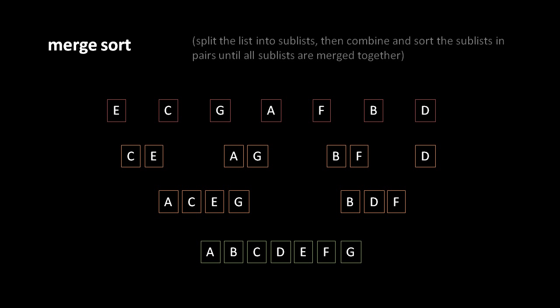The gist of merge sort is a divide and conquer strategy. We first consider each element as if it's its own sublist, and then we take pairs of those sublists and merge them together. It's in the merger process that we sort the items, so the result of each merger is a sorted sublist. We keep merging these sublists until finally everything is merged back into one sorted list.